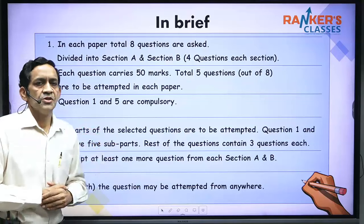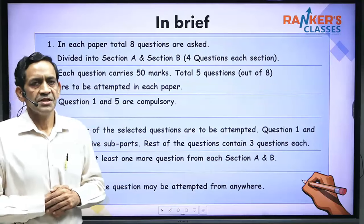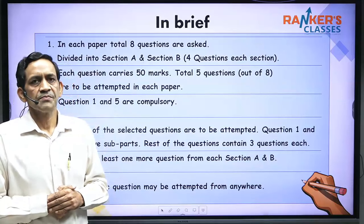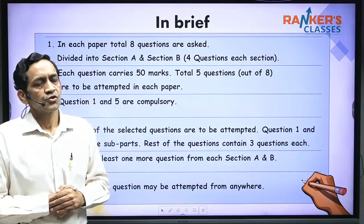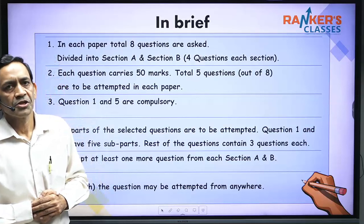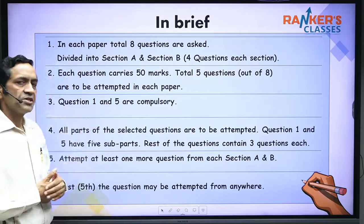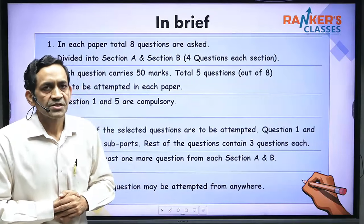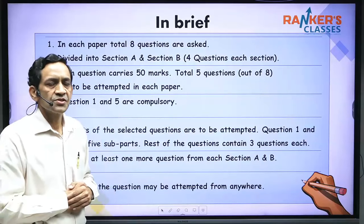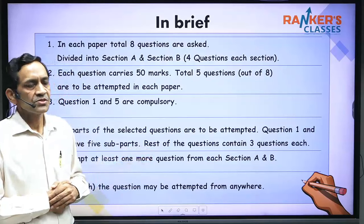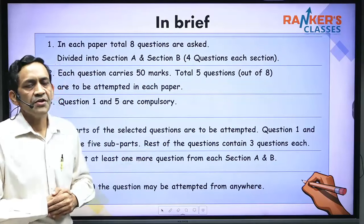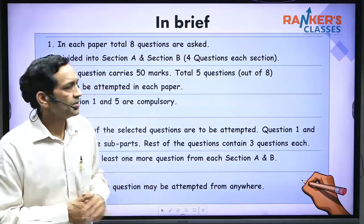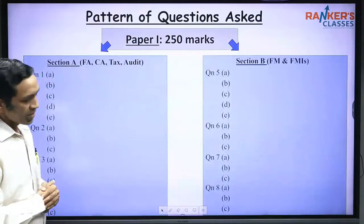Once you select any question, you have to attempt all the parts of that question. In compulsory questions there are five short notes, and in optional questions there are three parts. Besides the two compulsory questions, you have to attempt at least one question from Section A and one question from Section B. That gives you four questions — two compulsory and two choice-based — and you can attempt the fifth question from anywhere.